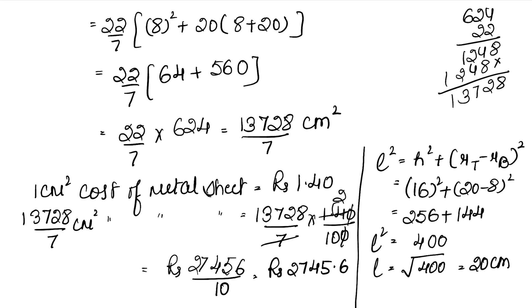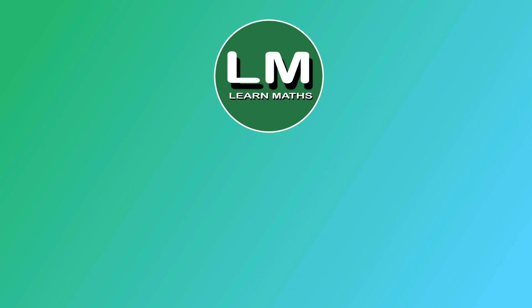Metal sheet की cost = 2745.6 rupees। यही हमारा answer है। Book में दिया हुआ answer गलत है — right answer is 2745.6 rupees।